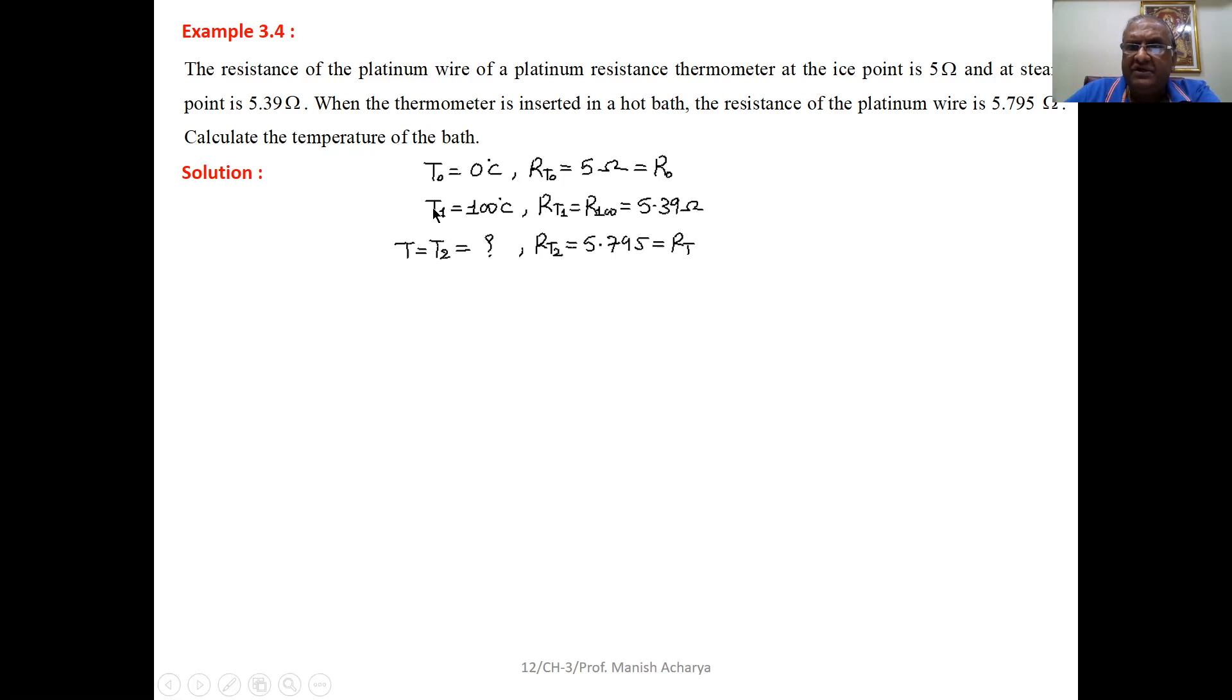Now at temperature T1 equal to 100 degrees Celsius, that is the steam point. Resistance R at temperature T1, T1 is 100 degrees Celsius, so we can write R at 100 degrees Celsius, that is 5.39 ohm.